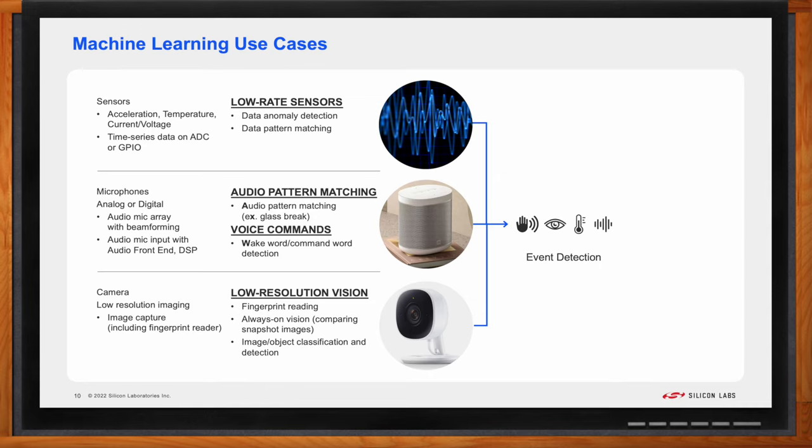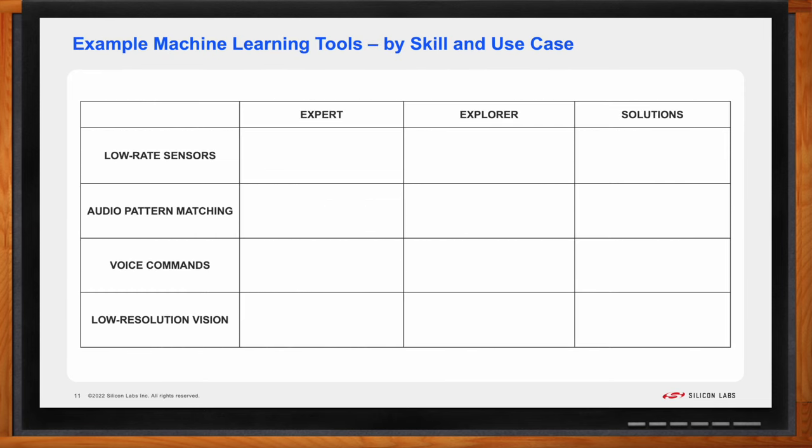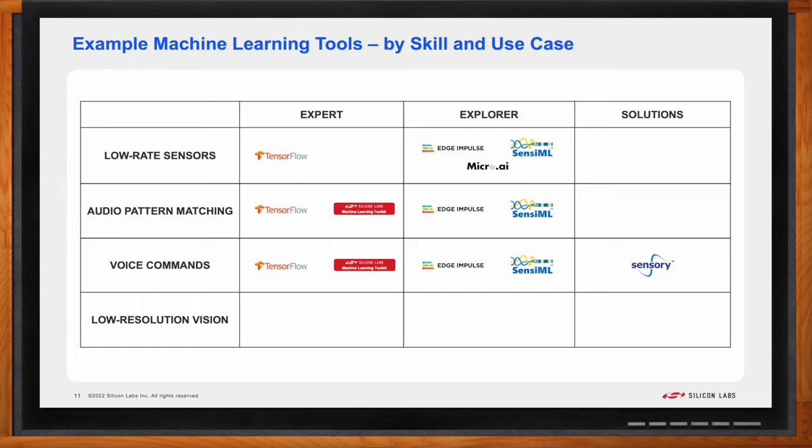Okay, so how do you put this in practice? Here's how the two views are combined. We use a table that I'll populate with some of the machine learning tools we support on our chips. What you'll see is how the different tools are applicable to their appropriate use cases, as well as the machine learning skills needed to use the tool. For low-rate sensors, there is TensorFlow for the expert, and there are Explorer tools that support those use cases. For audio pattern matching, you'll notice that micro-AI is not on the list, but the Silicon Labs machine learning toolkit is. For voice commands, you'll notice that sensory is added as a solution provider, where no machine learning knowledge is required. And finally, for low-resolution vision, not only TensorFlow is available for the expert, but Edge Impulse has some sophisticated object detection modules in their Explorer tool.